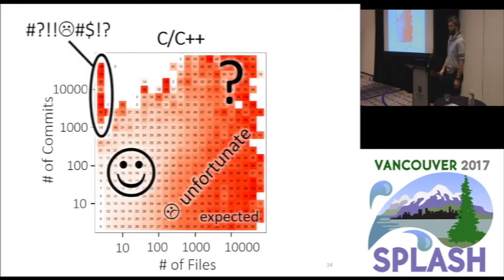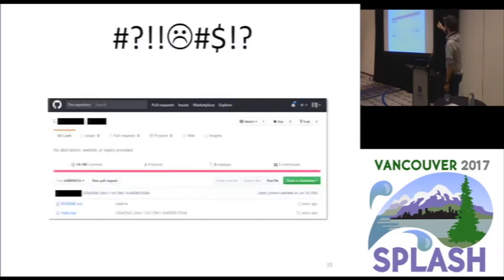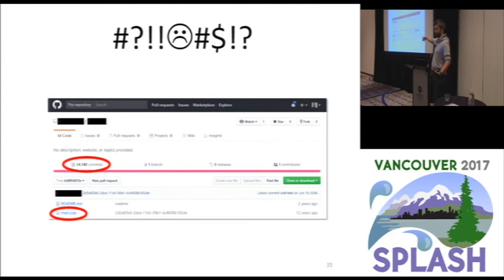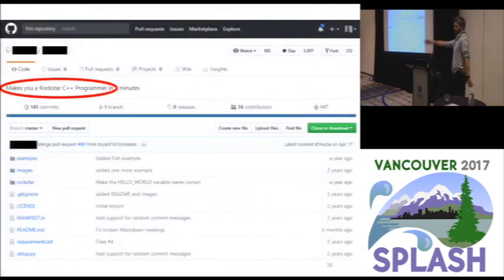There's also a really weird region: projects with one file and tens of thousands of commits. We tried to look at them. We anonymized what we found for this presentation. A sanity check: there is one CPP file with 34,000 commits. The commit messages were super weird. So we dug a bit deeper and found something even more interesting — again, anonymized.